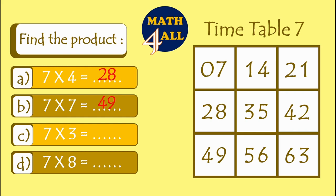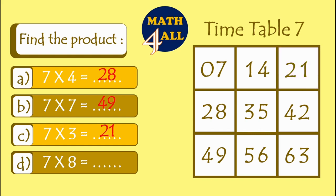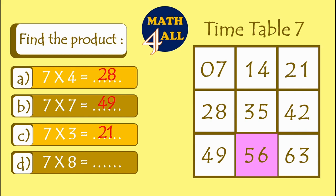The next example C — 7 times 3. What should we do? We will count 3: 1, 2, 3. So 7 times 3 equals 21. Now let's go to the next one — 7 times 8. Let's count 8: 1, 2, 3, 4, 5, 6, 7, and 8. We stop on 56. So 7 times 8 equals 56.